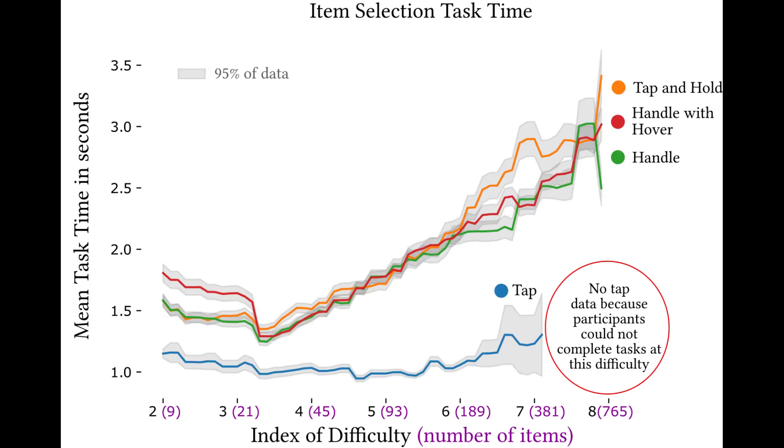For task times, users took about 1.2 seconds to do a tap selection and 1.4 to 2.3 seconds using the other techniques for a comparable range of task difficulty. For difficulties that were not reached using tap, participants took up to three seconds using the visual feedback techniques.